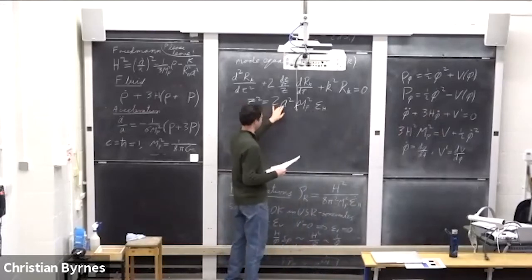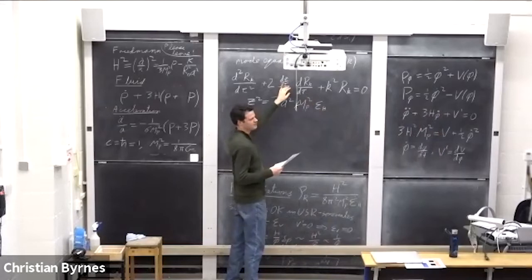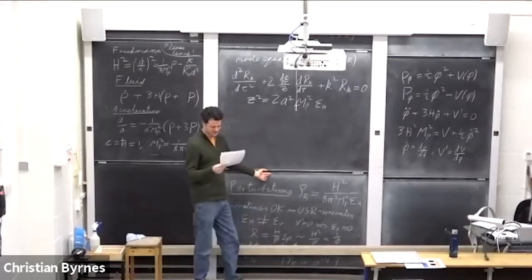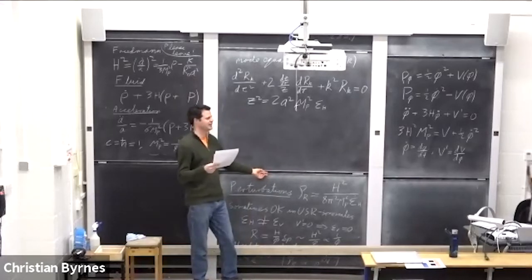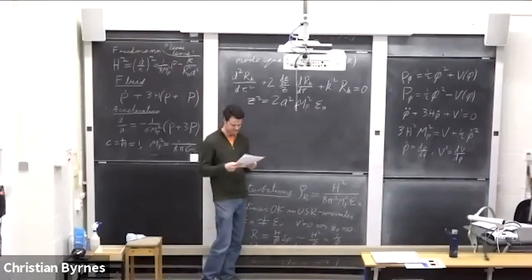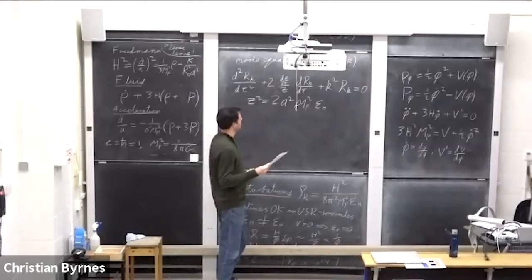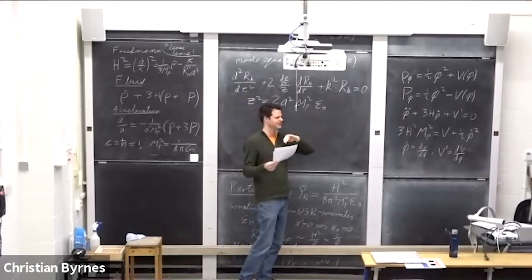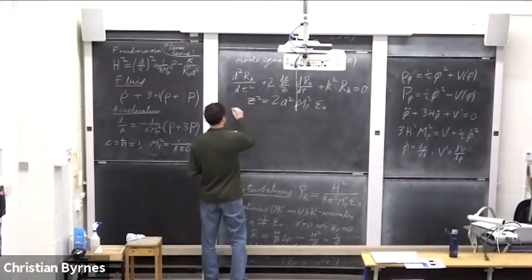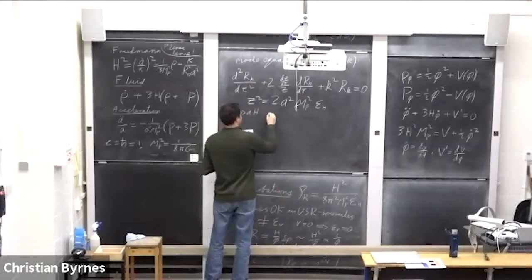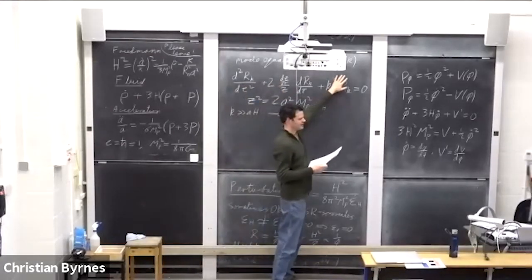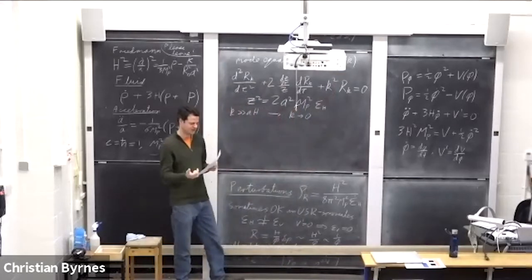I'm going to start with the long wavelength limit. Long wavelengths mean small k — since k is inversely related to length, the super-horizon limit is k much much less than aH. We can take this as k goes to zero, giving a much simpler equation valid only on large scales, large compared to the comoving Hubble scale during inflation. We can play exactly the same trick as before: let v equal dR_k/d tau, so we get the integral of dv/v equals minus 2 times the integral of z'/z d tau.